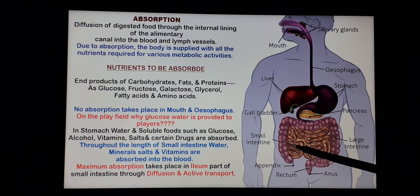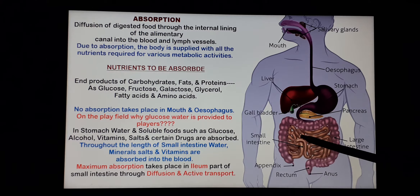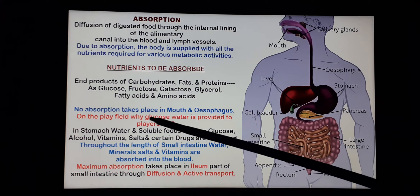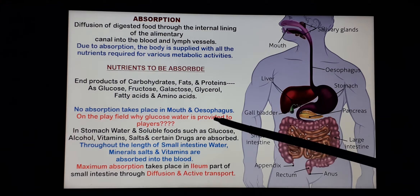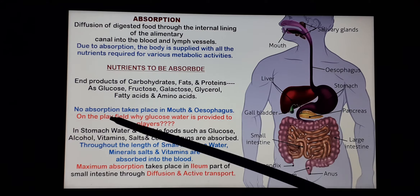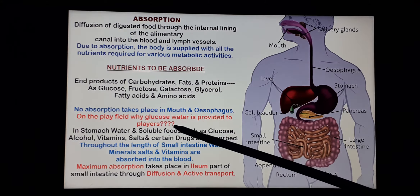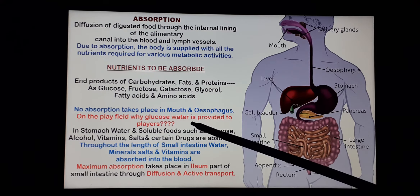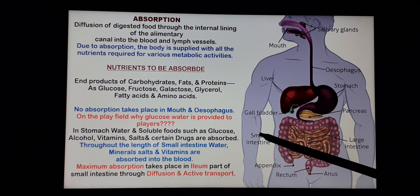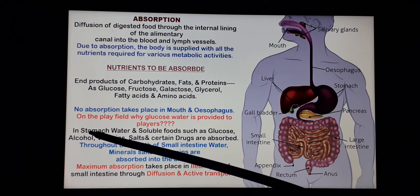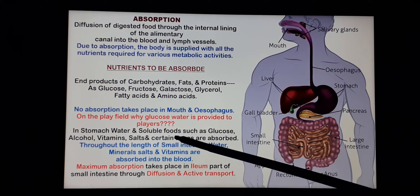Before that, absorption is not possible for these substances. But still, we see some absorption takes place in the upper parts of the alimentary canal. Mouth and esophagus — there is no absorption taking place. Absorption starts in the stomach. Have you ever realized why on the playing field, glucose water is provided to the players before or after the event? Because glucose is absorbed in the stomach itself for energy. That means absorption of water and some soluble food like glucose, alcohol, vitamins, salts and certain drugs are absorbed in the stomach.